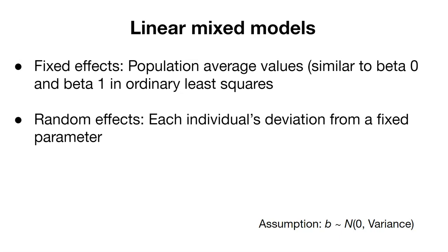Now linear mixed models consist of both fixed and random effects. Fixed effects we can think of are as population average values. So this could be similar to the beta 0 and the beta 1 values from ordinary least squares. The good thing about linear mixed models is that they also include random effects. And so this represents each individual's deviation from a fixed parameter. So now let's see what that looks like.